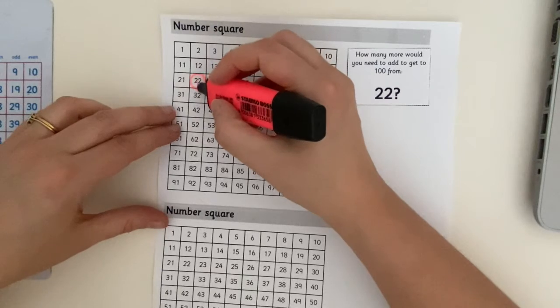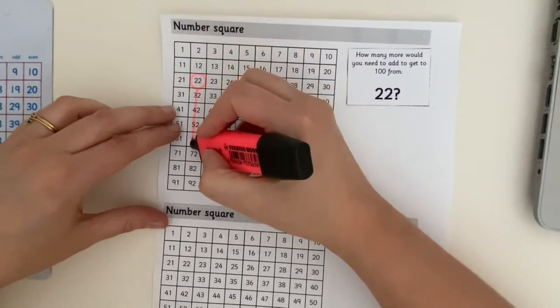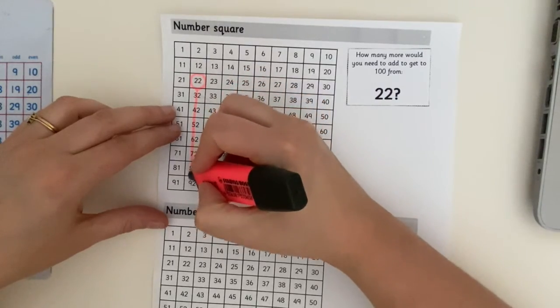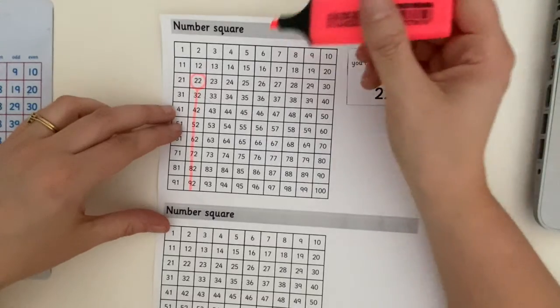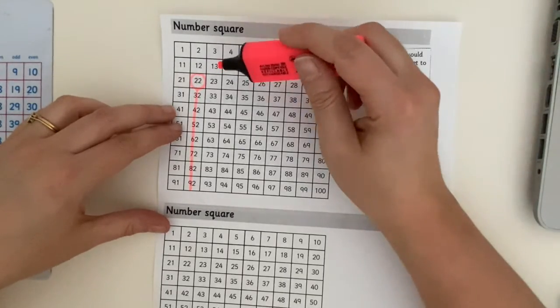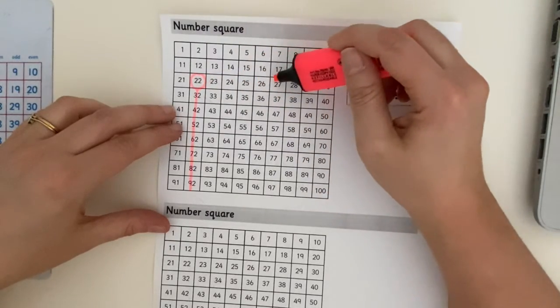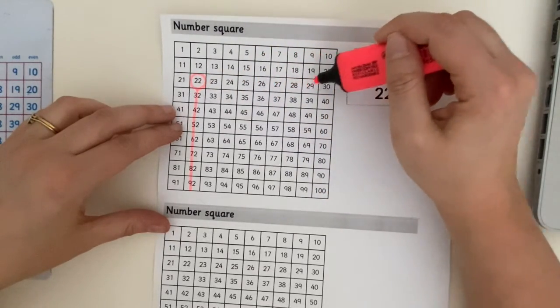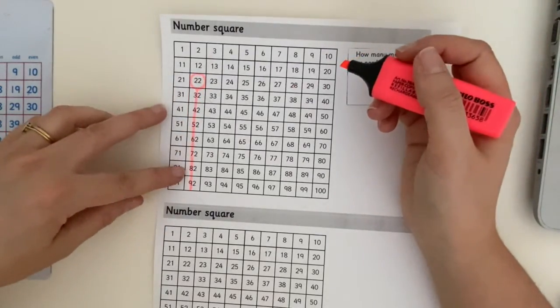Okay. So let's go down. How many tens have we got? One, two, three, four, five, six, seven tens. Okay. Now let's see how many ones we need to go. One, two, three, four, five, six, seven, eight. Let's count those again.